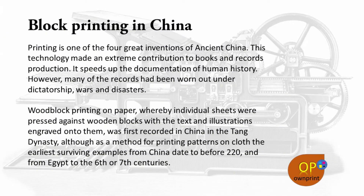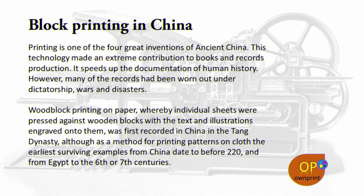Block printing in China: printing is one of the four great inventions of ancient China. This technology made an extreme contribution to book and record production, speeding up the documentation of human history. However, many records have been worn out under dictatorships, wars, and disasters. Woodblock printing on paper, whereby individual sheets were pressed against wooden blocks with text and illustrations engraved onto them, was first recorded in China in the Tang Dynasty. The earliest surviving examples from China date to before 220 AD, and from Egypt to the 6th or 7th centuries.